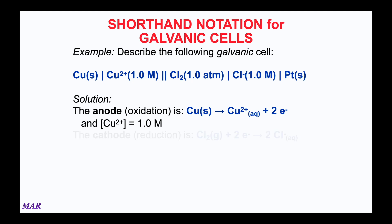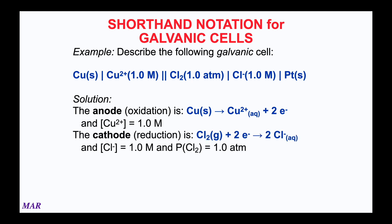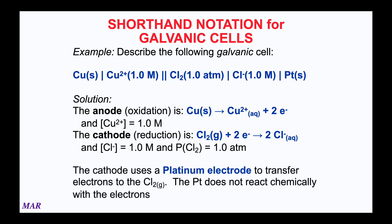Then there's the salt bridge indicated by the double lines. The cathode is chlorine gas going to chloride — chlorine gains two electrons to become two chlorides. The 1.0 atmosphere is the pressure of the gas, and 1.0 molar for the chloride means one mole per liter in solution. This cell also has a platinum electrode at the end because you need something to transfer the electrons to. Platinum is relatively invulnerable to many chemical reactions and is a better electrode choice in electrochemistry.